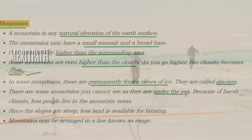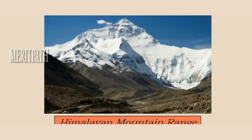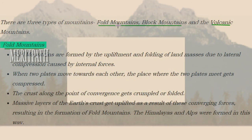Sometimes mountains are not only above the earth's surface level but even below the sea. Because of the extremely cold climates in mountain areas, very few people live there, as the human body cannot tolerate such extreme cold. In this image, students can see the Himalayan mountain range at great height, covered with ice rivers known as glaciers.